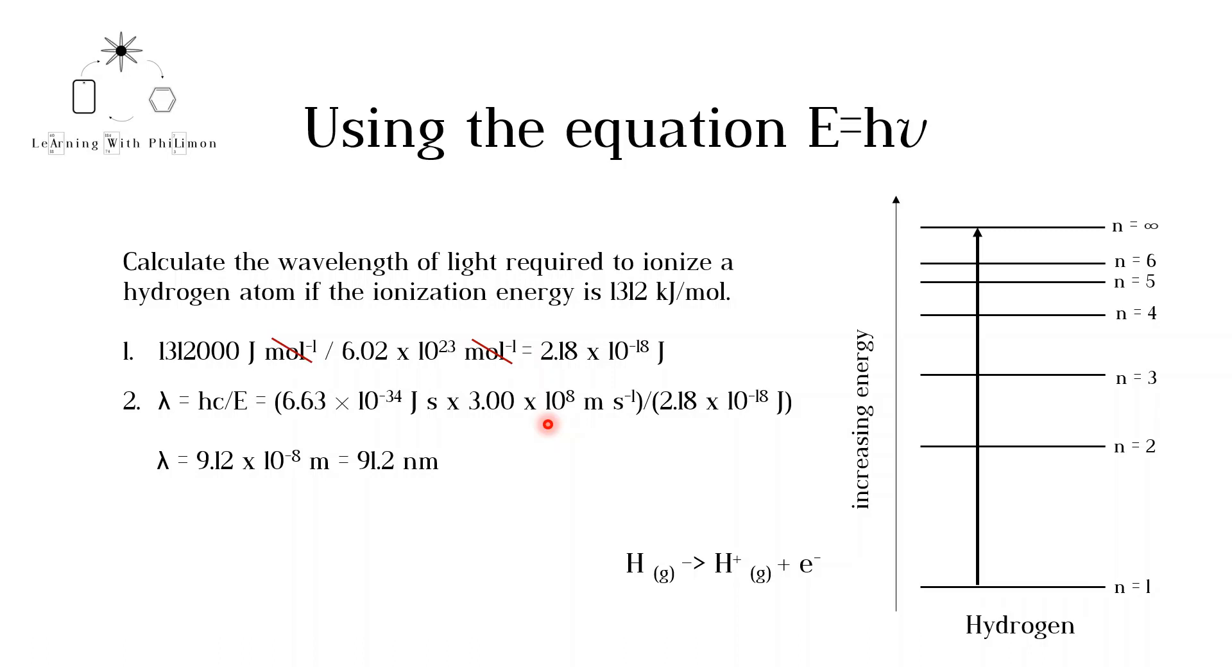The wavelength is equal to 9.12 times 10 to the minus 8 meters. This is equivalent to 91.2 nanometers. Remember that the prefix nano means 10 to the minus 9. Checking section 3 of the data booklet, you can see that this wavelength corresponds to UV light.